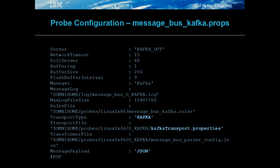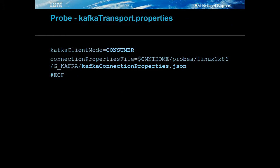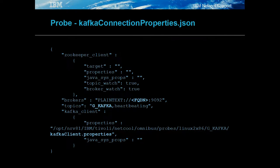The message bus probe's configuration only requires the transport type to be defined as Kafka and the payload as JSON for this configuration, with the transport file defining the source Kafka server. The Kafka transport properties defines the mode and Kafka connection properties file. The Kafka connection properties file defines the host, port, and topics to connect to, along with the Kafka client properties.